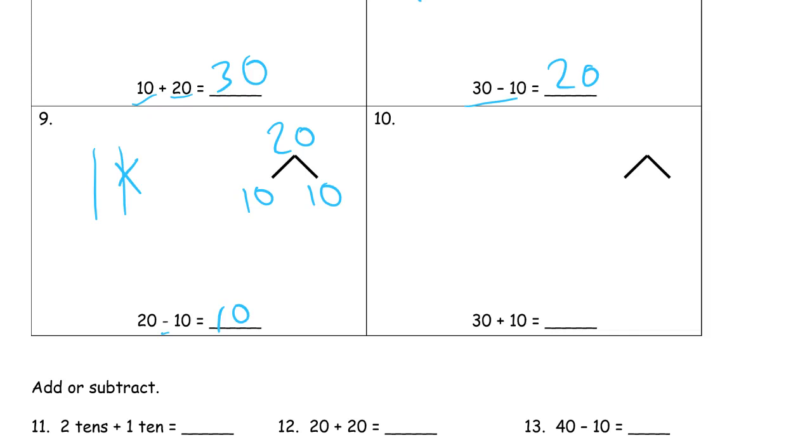30 plus 10. So that's 10, 20, 30, plus that 10 more is 10, 20, 30, 40. So our whole is 40. And our parts are that 30 and that 10. 30 and 10. There.